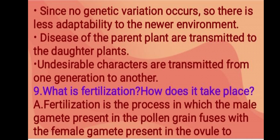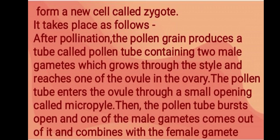Question: what is fertilization and how does it take place? Fertilization is the process in which the male gamete present in the pollen grain fuses with the female gamete present in the ovule to form a new cell called a zygote. It takes place as follows.